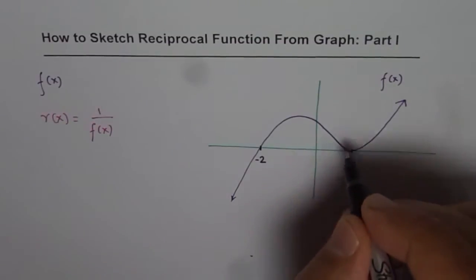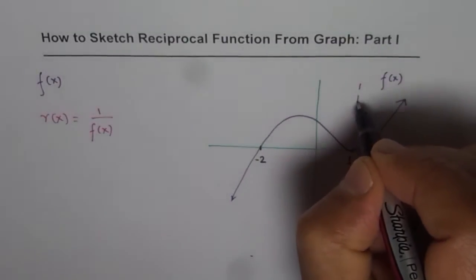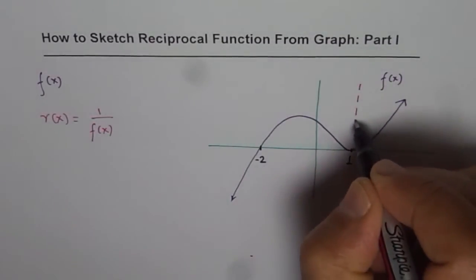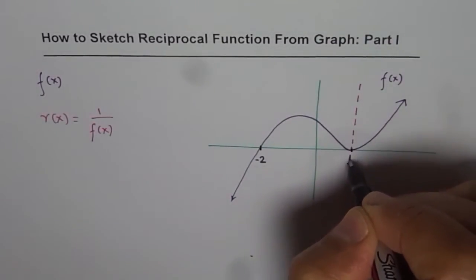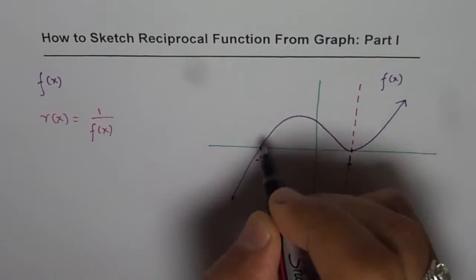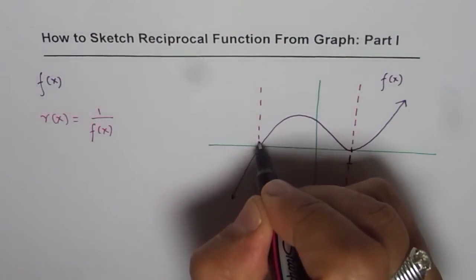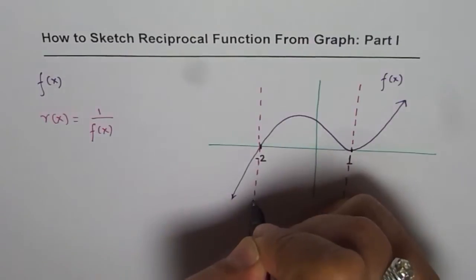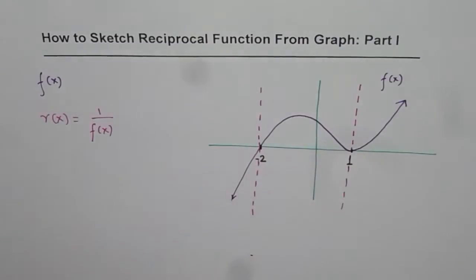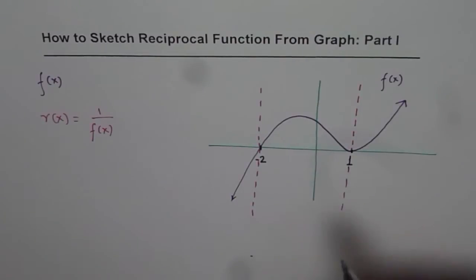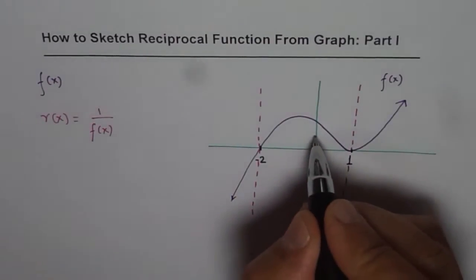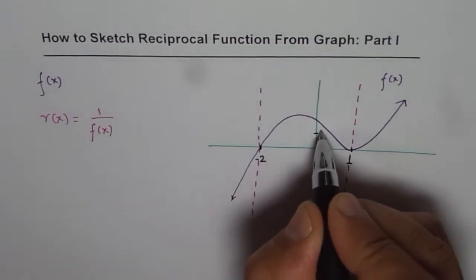So the first step is to draw vertical asymptotes at the x-intercepts. That should always be the first step. The second step is to look for the points where the function value is 1. Let us say this is 1 for us.